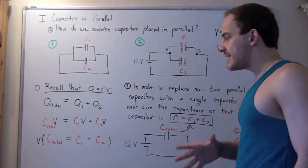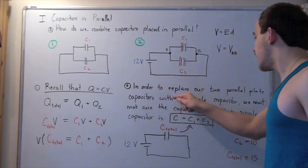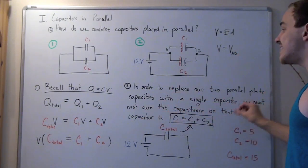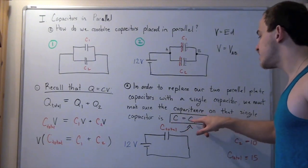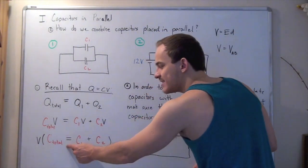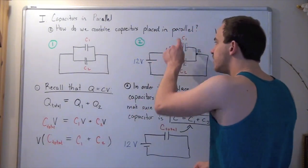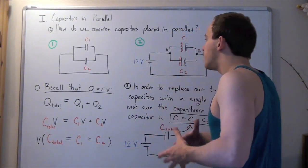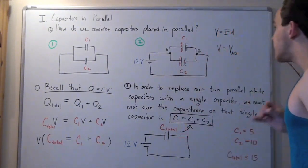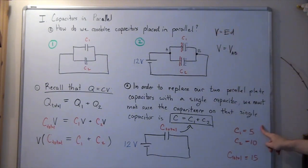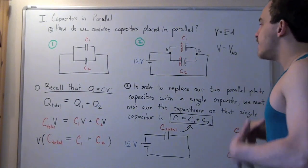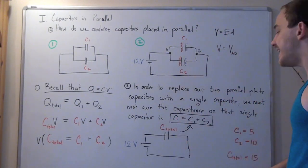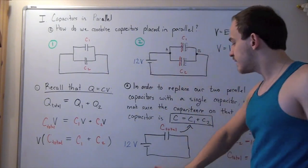In order to replace our two parallel plate capacitors with a single capacitor, we must make sure that the capacitance of that single capacitor equals C1 plus C2 — we simply add up the two capacitances. For example, if C1 has a capacitance of 5 and C2 has a capacitance of 10, then the replacement capacitor must have a capacitance of 15. So I rewrite the electric circuit in this simplified form.